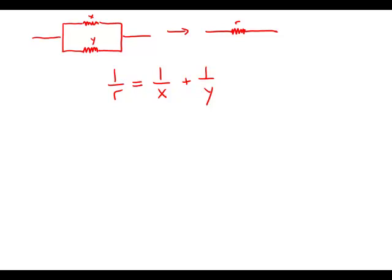So first of all, a tempting mistake. You might want to just take the reciprocal of everything and assume that R equals X plus Y. But you cannot take the reciprocal when you have addition, when you have more than one thing being added. You cannot simply take the reciprocal of both sides.